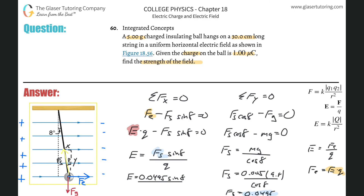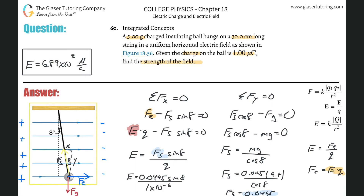Multiplying 0.0495 by sine of 8 degrees, then dividing by one times ten to the minus six, we get an electric field strength of approximately 6.89 times ten to the third newtons per coulomb. Thanks for tuning in — please remember to subscribe, and we'll see you soon.